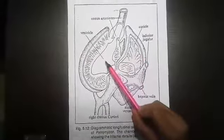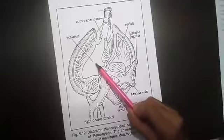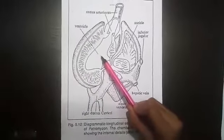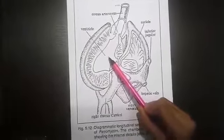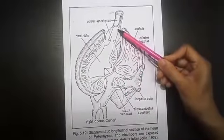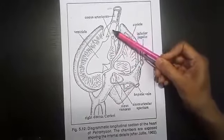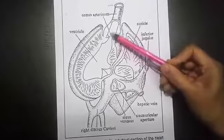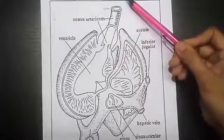The auricle opens into ventricle with auriculo-ventricular aperture guarded by auriculo-ventricular valve. And ventricle opens into conus arteriosus, also guarded by valve, which is continuous with the ventral aorta.